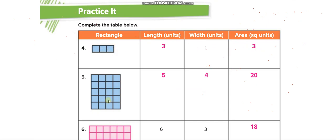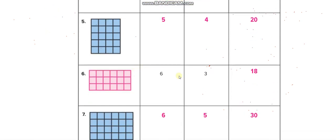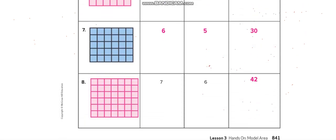Here you are given the length and you have to draw the rectangle. Draw 7 units in length and 6 units in width as shown. Then count or multiply length times width to find the total area.